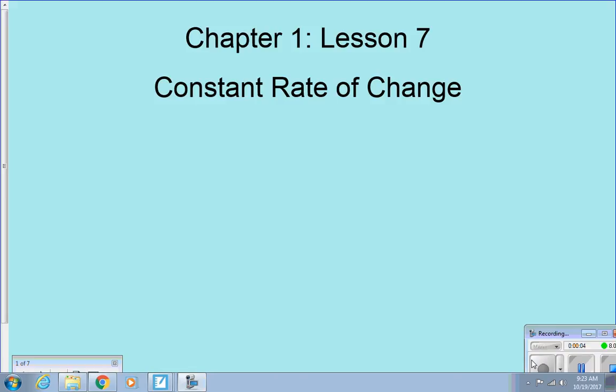Okay, so Chapter 1, Lesson 7, constant rate of change. Now listen, you already know how to do that. You already know how to do this. We're just calling it something different today. You've been finding the constant rate of change for the last few lessons. You just didn't know what it was called. So we're just going to call it something different today. I'm going to explain a little more in depth what it is and how to find it.